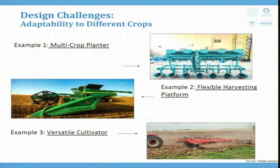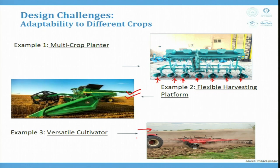Examples: a multi-crop planter with adjustable planting mechanisms for different seed sizes. A flexible harvesting platform adapts to varying crop heights and conditions. A versatile cultivator with interchangeable tines suits different soil types.